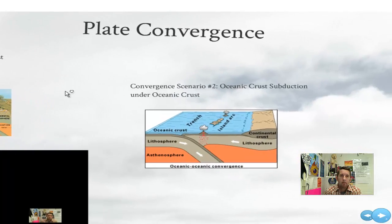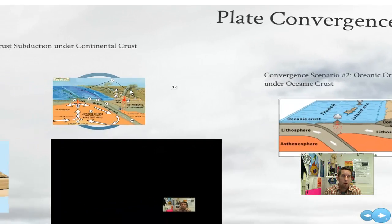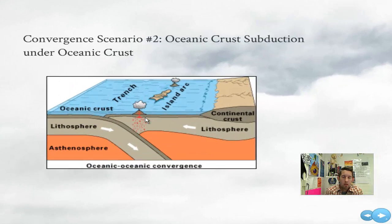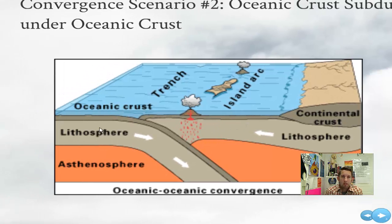That's converging plates, scenario number one. Number two: oceanic crust subducting under oceanic crust. If we have two oceanic plates coming together, whichever one's heavier is going to subduct under the other. Same scenario — it takes water with it, the water gets superheated, steam rises, brings magma with it. We get a volcanic island or a chain of islands, and also a trench along the margin of those two plates.